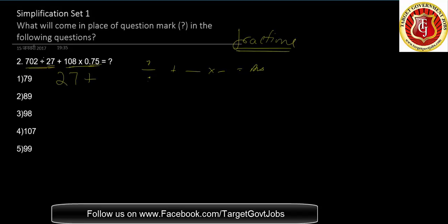Plus 108 into 0.75 - three-fourths. One-fourth of 108 is 27, so three-fourths is 81. So 81 plus 27 is approximately near about 108. So this is the answer.